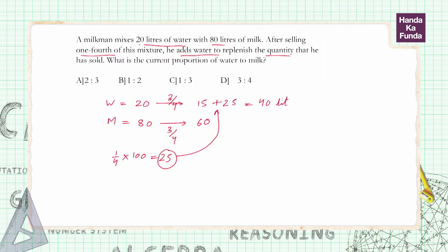The quantity of milk is unchanged, that is 60 liters. So what is my required ratio? My required ratio or current proportion of water to milk is 40 is to 60, which can be reduced to 2 is to 3, which is given to me as option A. Thank you.